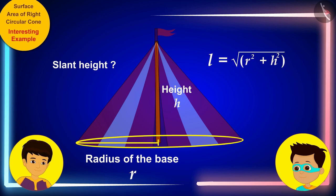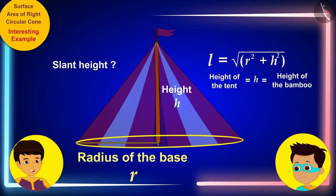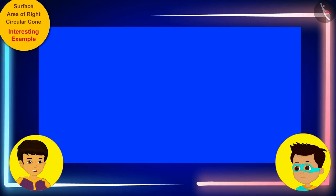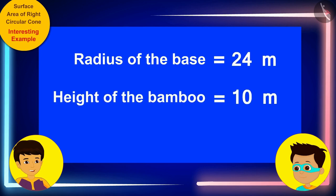Oh yes, and the height of the tent is equal to the height of the bamboo. Let me quickly measure. The radius of the base of the tent is 24 meters and its height is 10 meters.